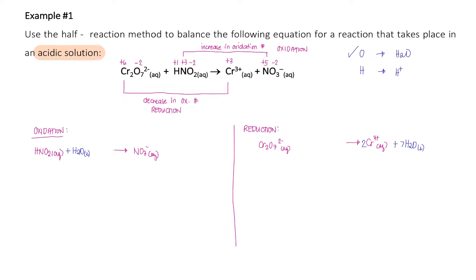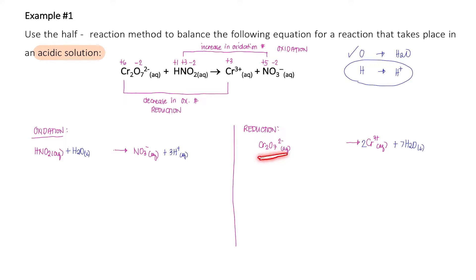After balancing oxygen, we balance hydrogen by adding H⁺ ions. For the oxidation half-reaction: there is a total of three hydrogen atoms on the left side (one plus two from water), and none on the product side, so we add 3 H⁺(aq) to the right. For the reduction half-reaction: we have 14 hydrogen atoms from the seven water molecules (7 × 2), so we add 14 H⁺(aq) to the left side.